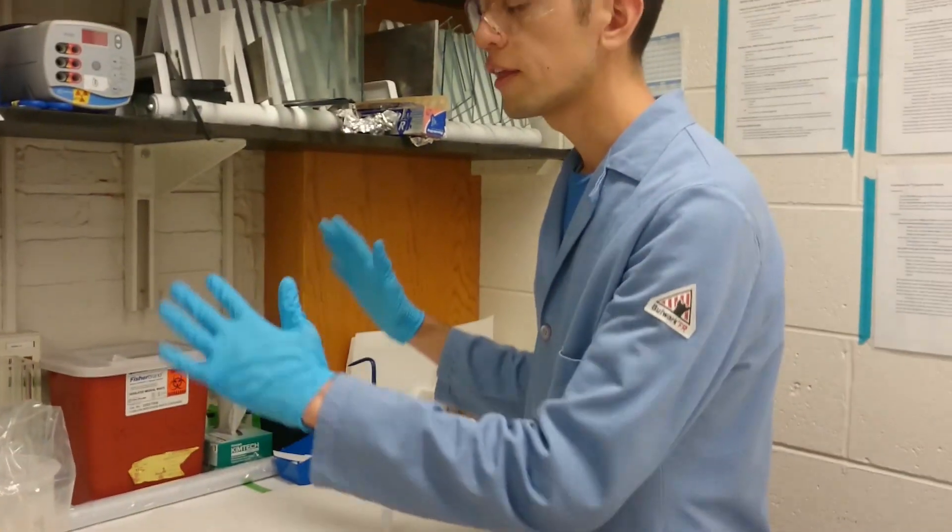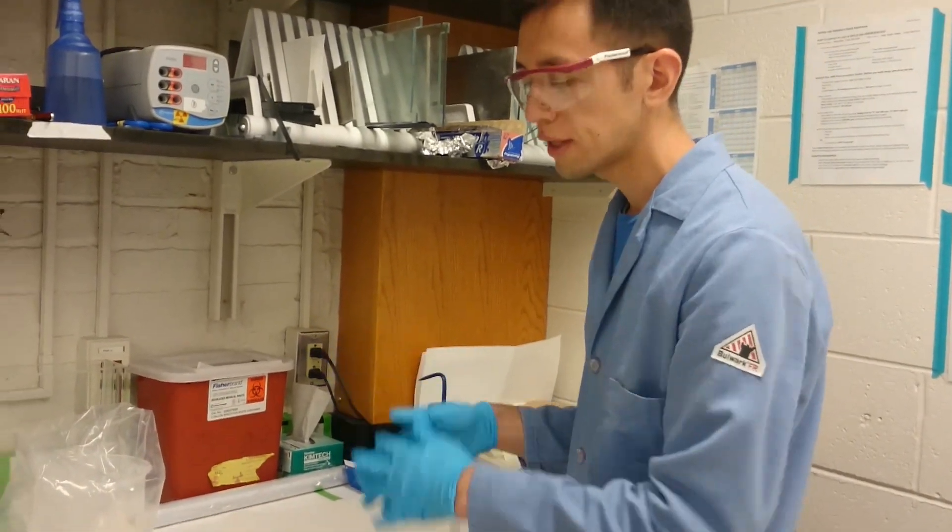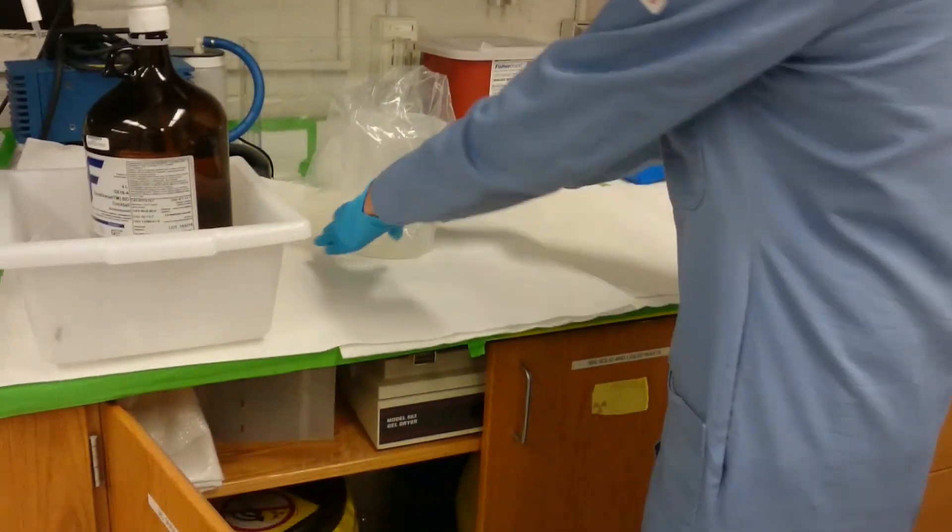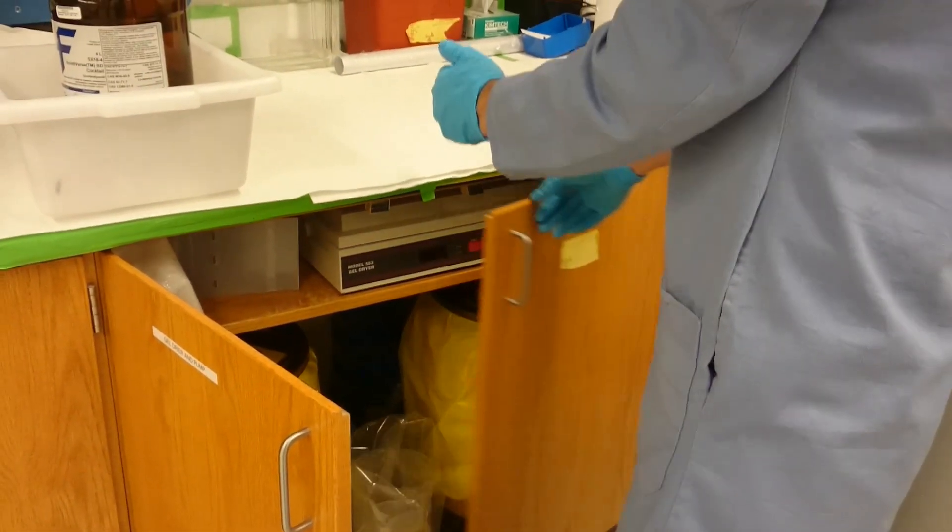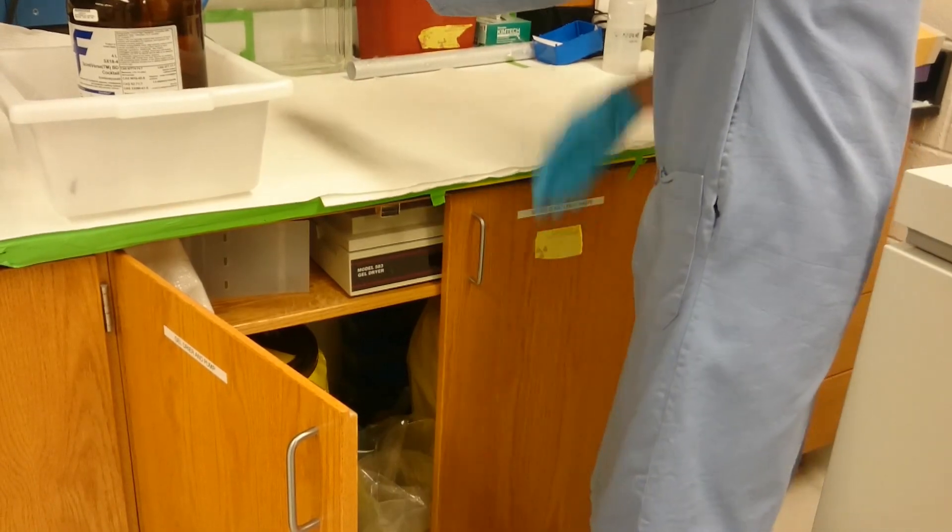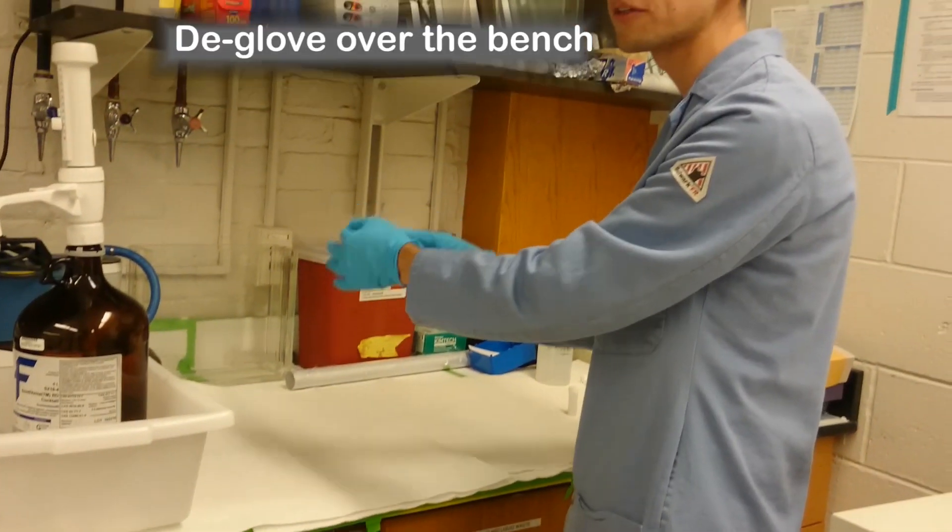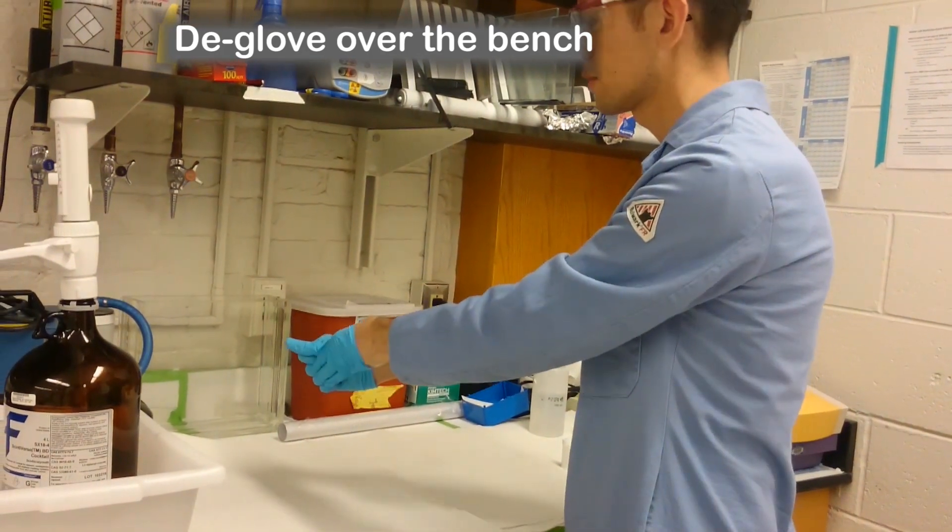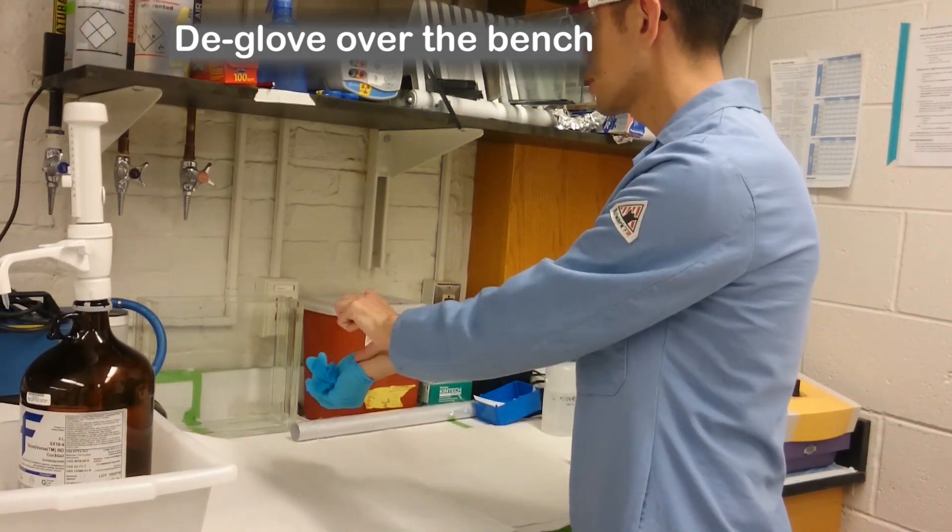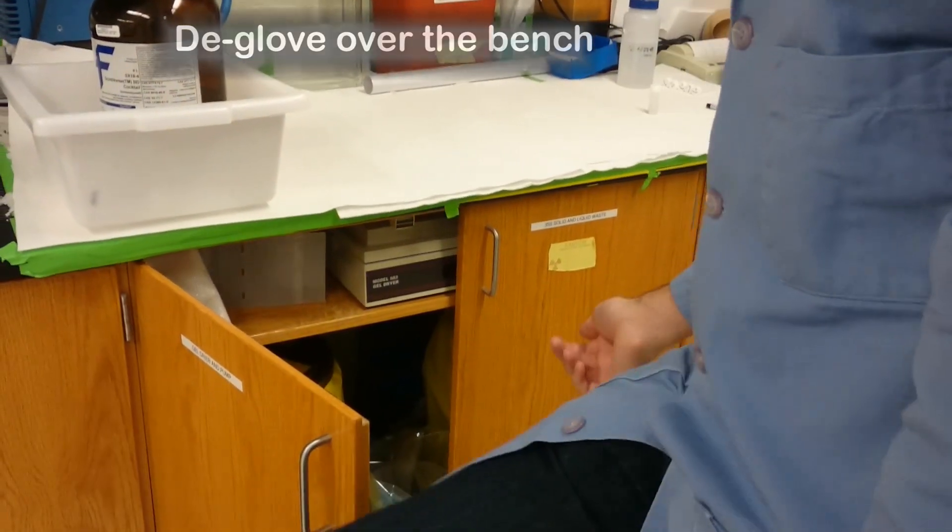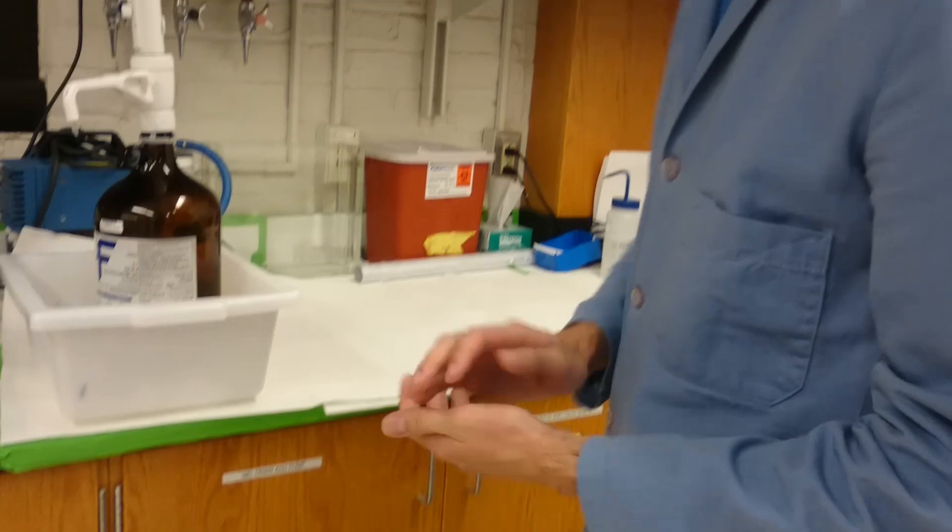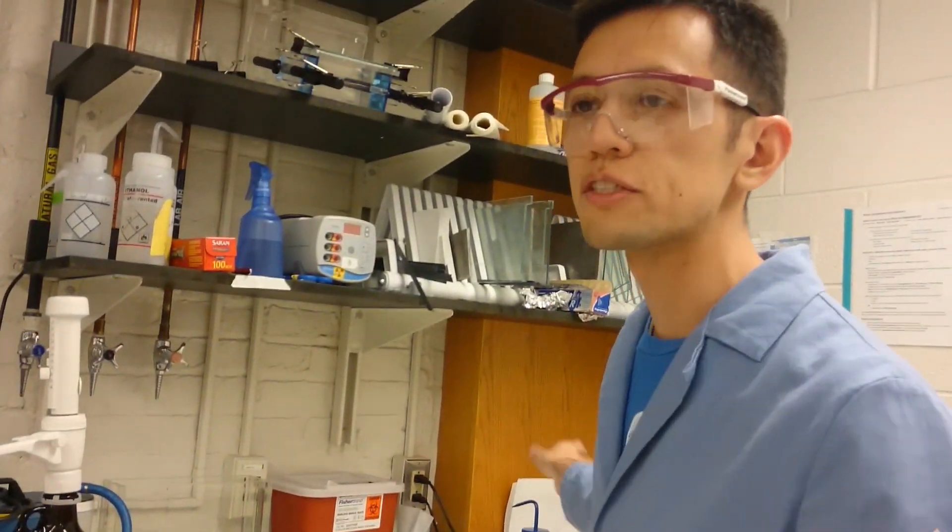When you're completely finished working, you should deglove. Always make sure to deglove over the work area, just in case your gloves were contaminated, and they throw aerosols. You want it to be over the workbench. Deglove by reaching inside, turning it inside out, throw this in the waste container, and close the cabinet. Also make sure to turn off the scintillation counter.